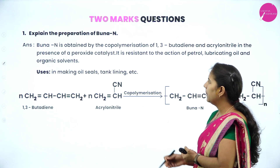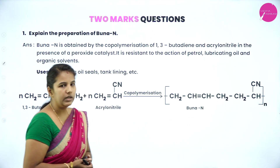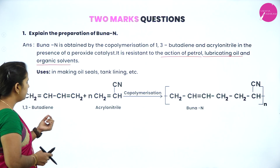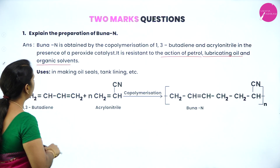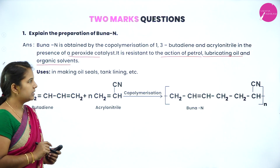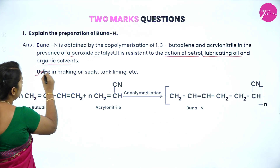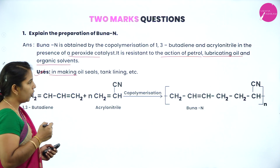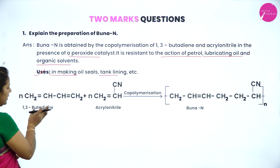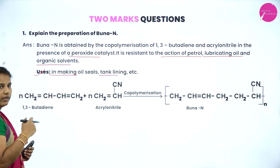Explain the preparation of Buna-N. Buna-N is a synthetic polymer and also an elastomer. It is obtained by copolymerization of 1,3-butadiene with acrylonitrile in the presence of peroxide as a catalyst. Buna-N is resistant to the action of petrol, lubricating oil, and organic solvents. It is used to make oil seals and tank linings. In 1,3-butadiene, there are four carbon atoms with double bonds between the 1st and 3rd carbon atoms.